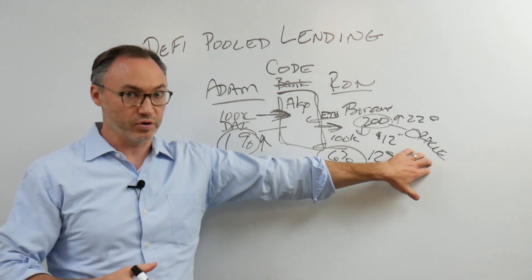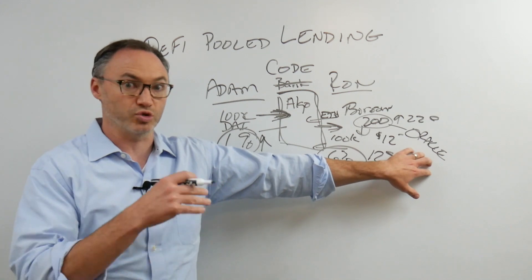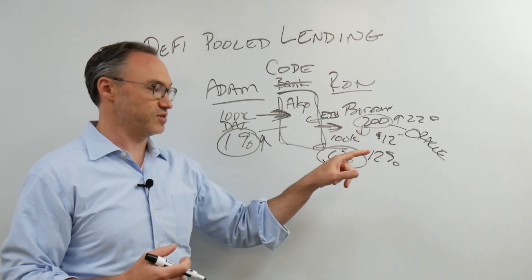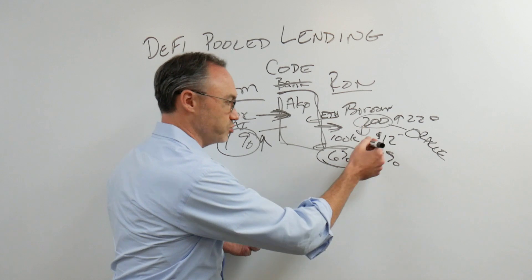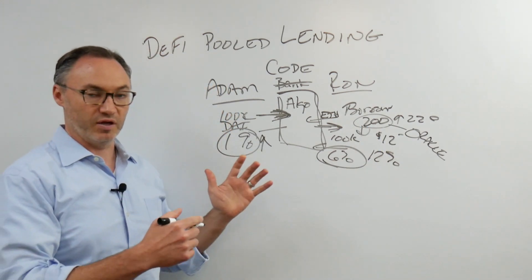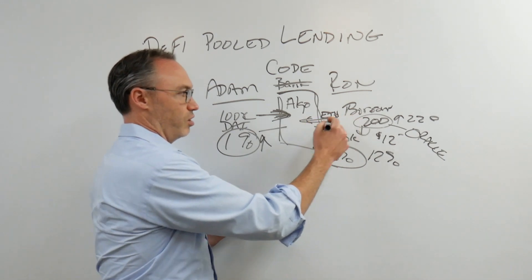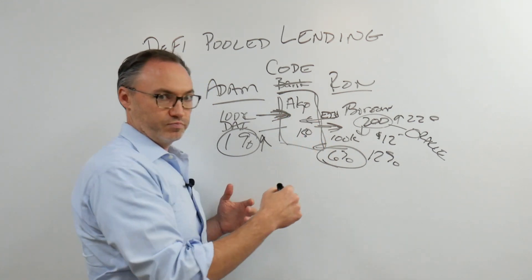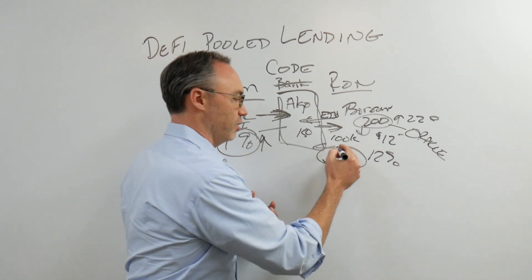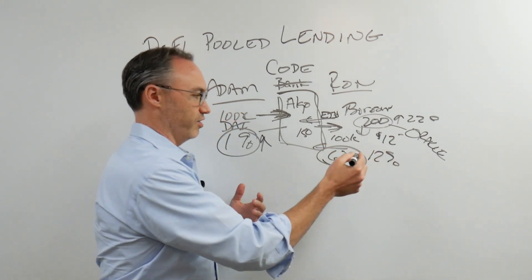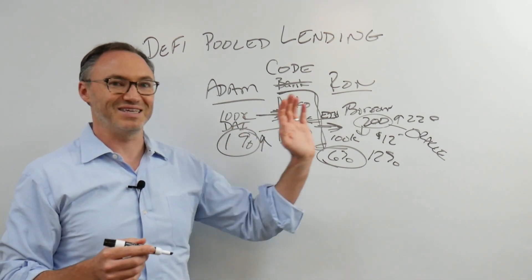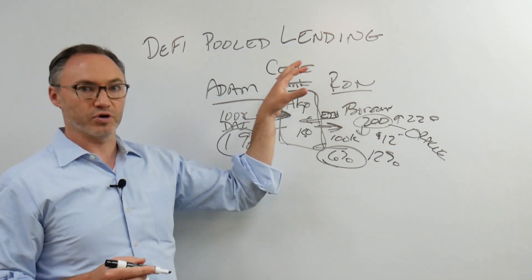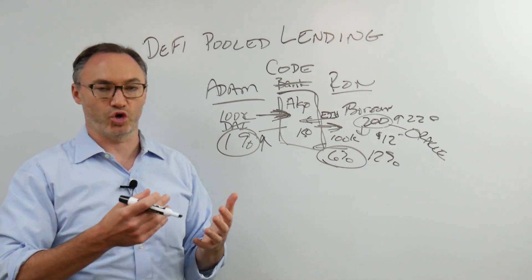And that's why the oracles are so important, and we've talked about those in other videos, why the oracles are so important right now. Because the oracle is informing this algorithm as to what the price is at any particular time. If it falls below 150, what it says is, okay, now, we're going to take this ETH from Ron. He no longer can take it back. We're going to take the ETH from Ron, which is worth 150, and we're going to potentially hold it in our protocol, sell it, whatever we need to do. And Ron now has to pay back the DAI.